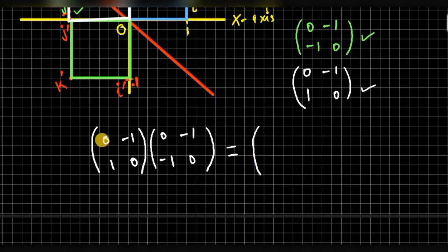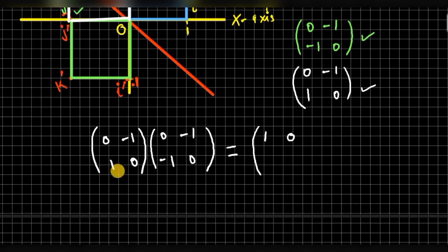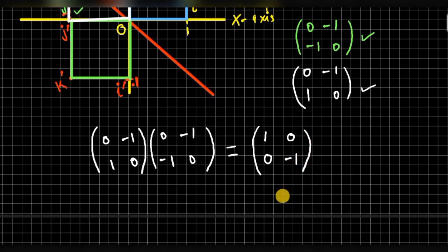Multiplying row by column: 0 times 0 plus negative 1 times negative 1 gives 1. Next, 0 times negative 1 plus negative 1 times 0 gives 0. Then 1 times 0 plus 0 times negative 1 gives 0. Finally, 1 times negative 1 plus 0 times 0 gives negative 1. Therefore, the matrix representing the entire transformation is (1, 0; 0, -1).